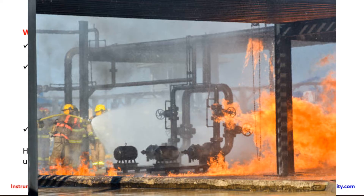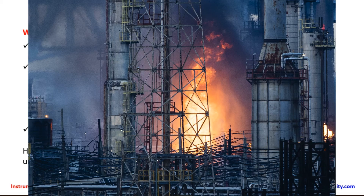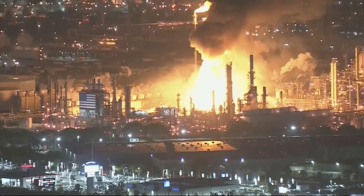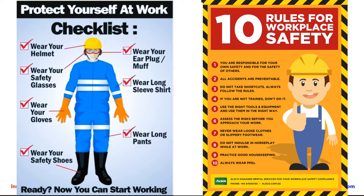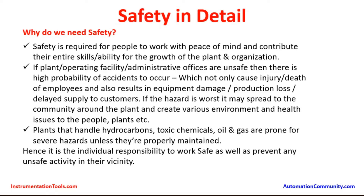Plants that handle hydrocarbons, toxic chemicals, oil and gas are prone to severe hazards unless they are properly maintained. In production facilities and manufacturing units handling these substances, there is a high chance of risk due to any small mistake or lapse in safety attention. Hence, it is the individual responsibility to work safely as well as prevent any unsafe activity in their vicinity. Workers and employees must be very careful and watch around the plant to ensure all conditions are kept in safe operating condition.